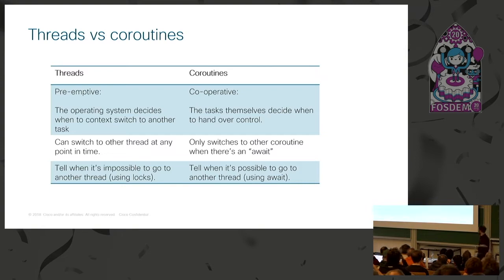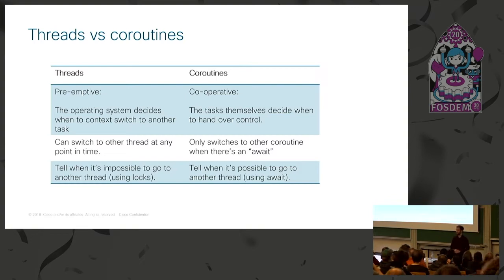The key difference between threads and coroutines is that threads are preemptive — the operating system decides when to context switch. With coroutines in asyncio, we are in control over the context switching. That means most of the time we don't have to use locks, because we know what pieces of code run atomically and won't be interrupted — exactly where we don't have an await. So it's much easier to get your code right compared to threading.